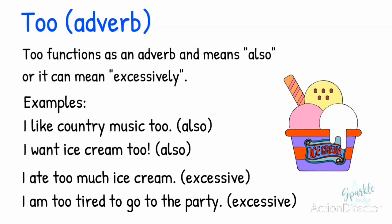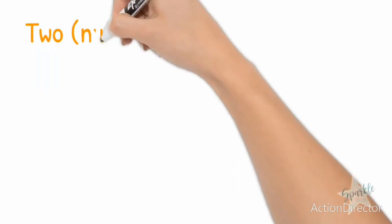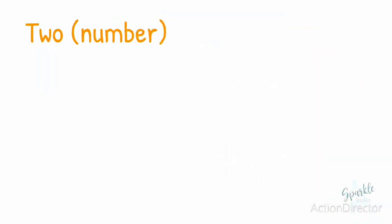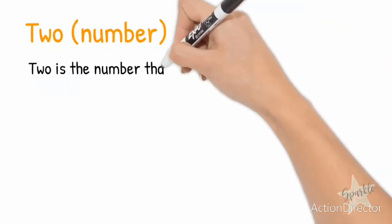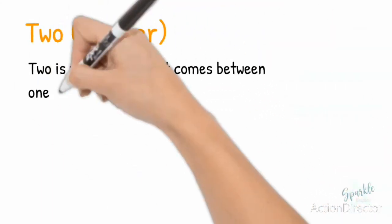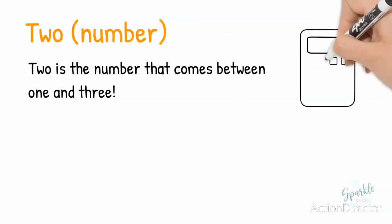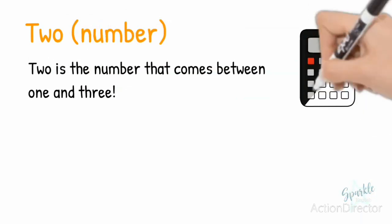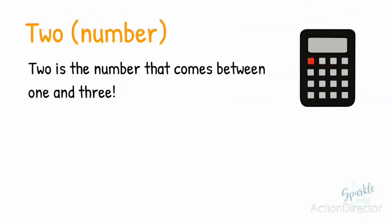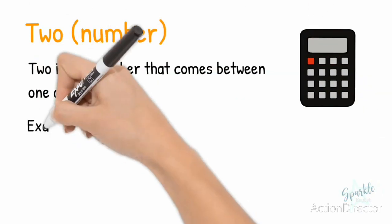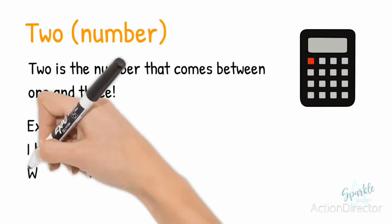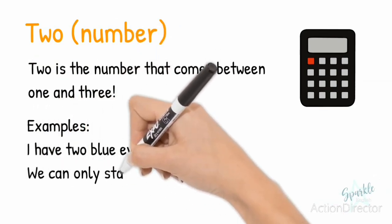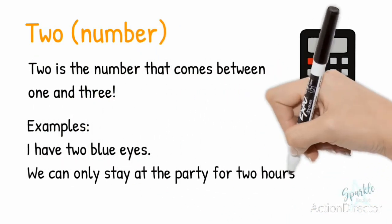Now let's look at two, spelled T-W-O, which is the easiest of them all. Two is the number that comes between one and three. For example: I have two blue eyes. We can only stay at the party for two hours.